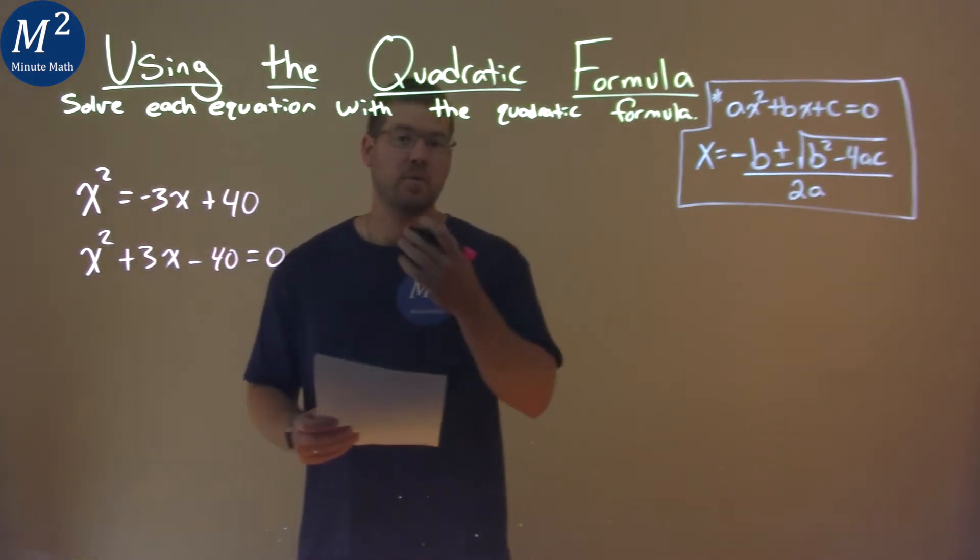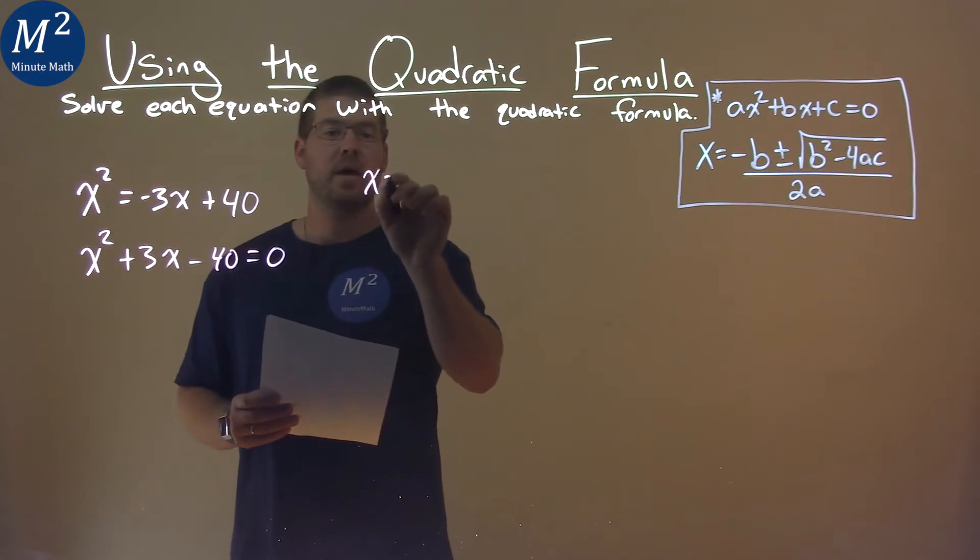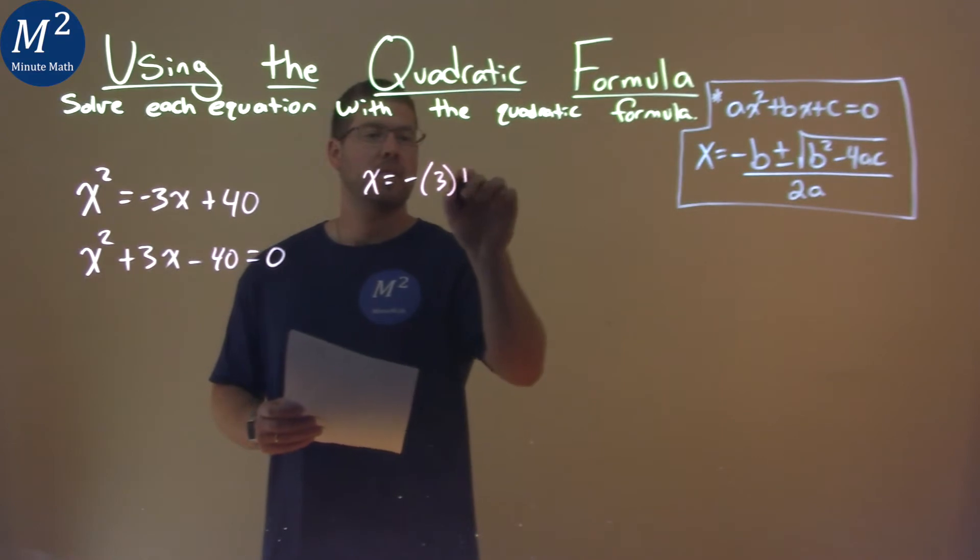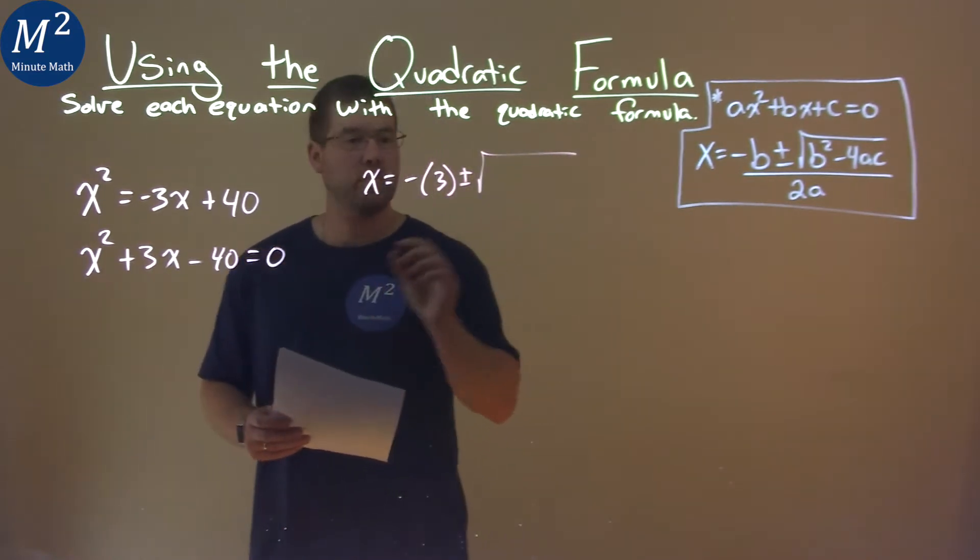I now can use the quadratic formula. x equals a negative b value, which is 3, plus or minus the square root of 3 squared, or b squared.